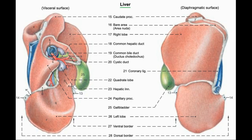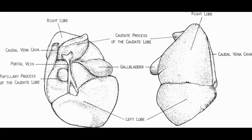The quadrate hepatic lobe is located on the inferior surface of the right hepatic lobe, present between the left and right lobes in an anterior and dorsal location. The caudate hepatic lobe of bovine's liver is further divided into two parts: the caudate process and papillary process. The remaining three lobes — right hepatic lobe, left hepatic lobe, and quadrate hepatic lobe — are undivided in the ox.